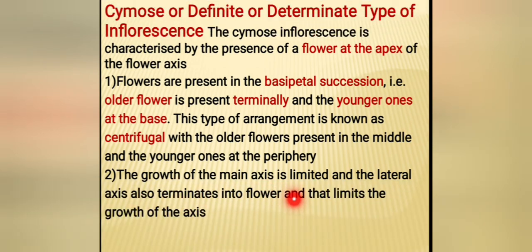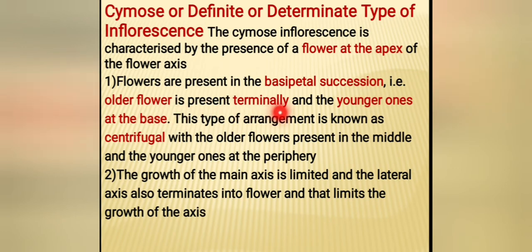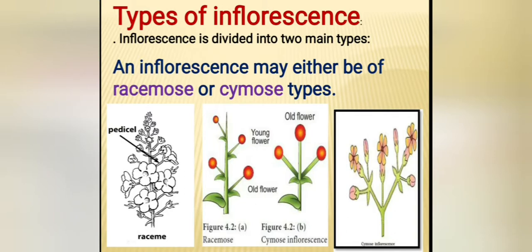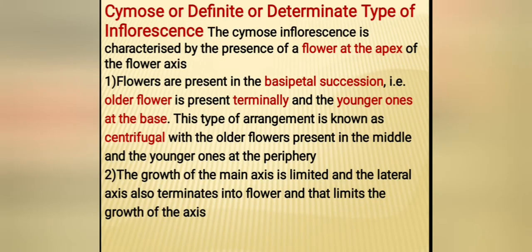In cymose, lateral axes also terminate in flower, which limits the growth of the axis. Older flower is at the apex of the inflorescence axis - basipetal succession means older at apex or terminal end and younger at the base. This arrangement is called centrifugal succession - from center to periphery, hence called centrifugal.